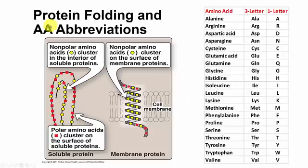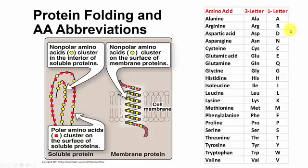Here are the amino acid abbreviations — a three-letter abbreviation and a one-letter abbreviation. You don't have to learn these right now, but you will see them as time goes on, so I want you to be able to refer back to them if you need to — you'll learn them the more you use them. The non-polar amino acids are shown in yellow, and they tend to be clustered together on the inside of proteins.